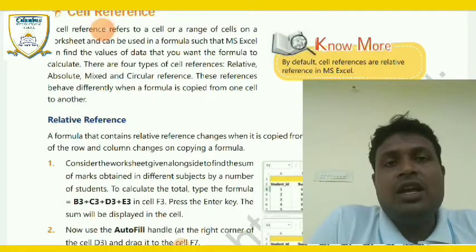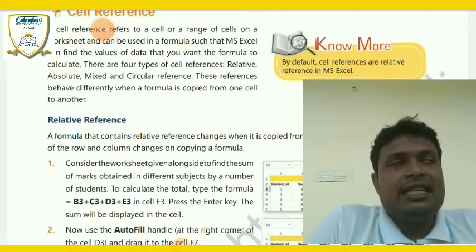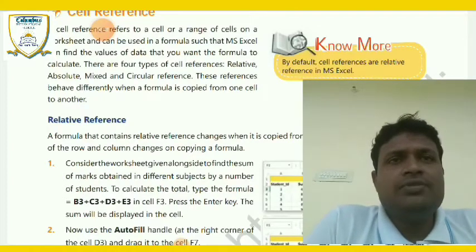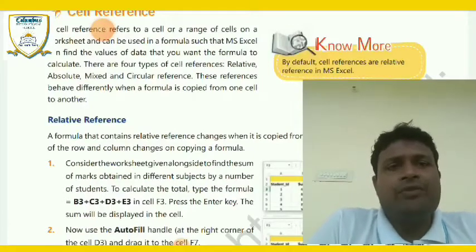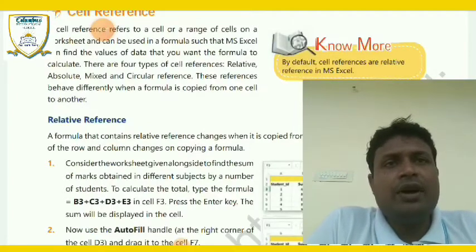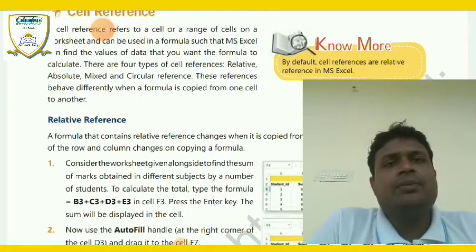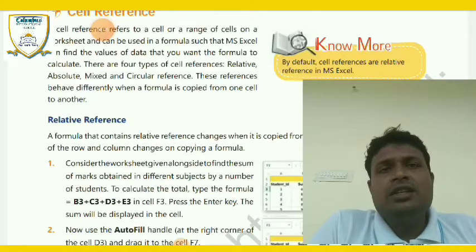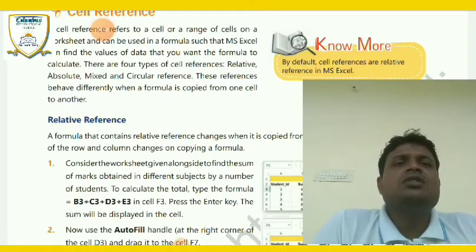An Excel sheet has two things — first is column, second is row. The mix-up of columns and rows is called a cell reference.